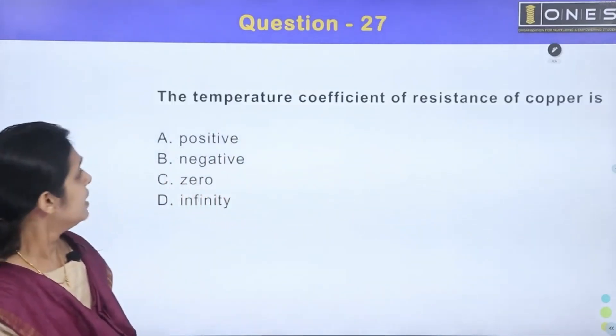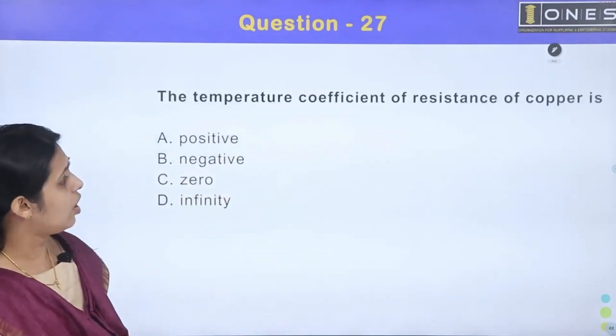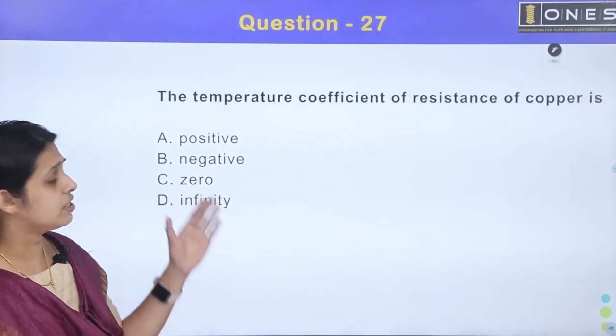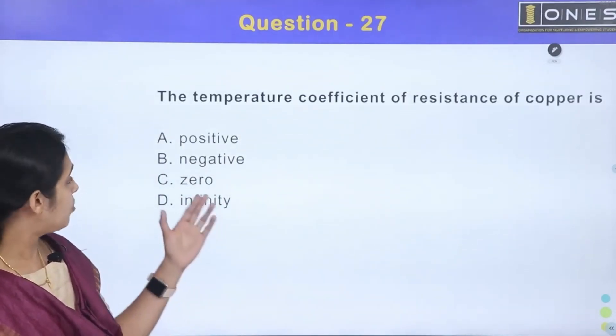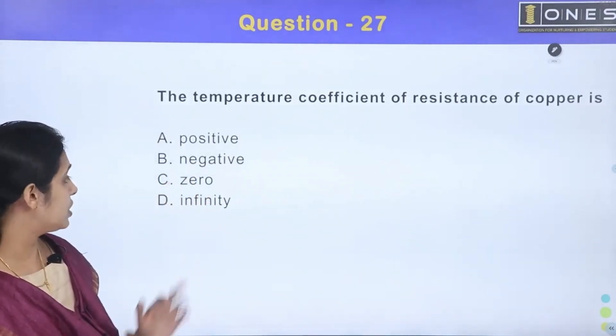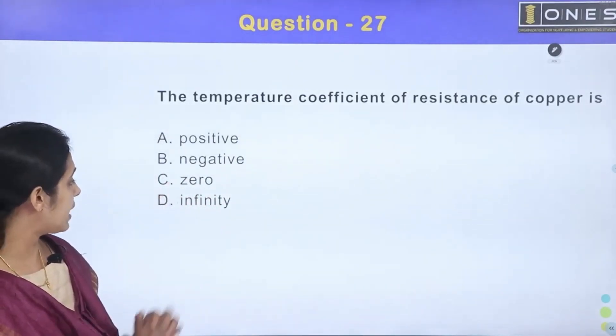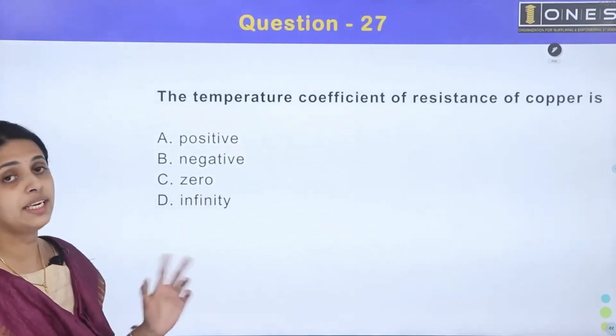Next question: the temperature coefficient of resistance of copper is — option A: positive, option B: negative, option C: zero, option D: infinity.